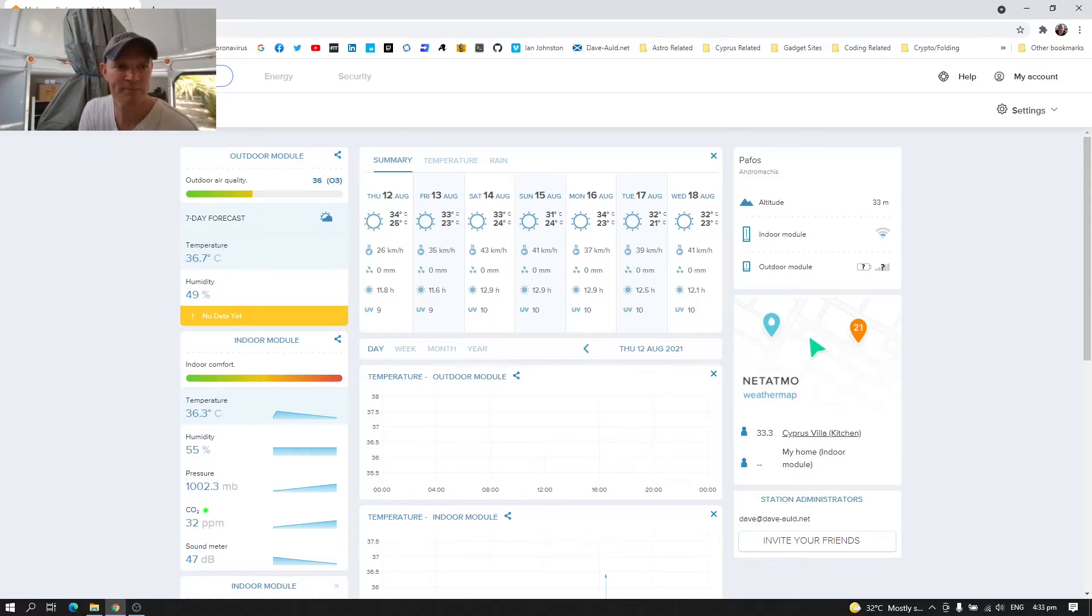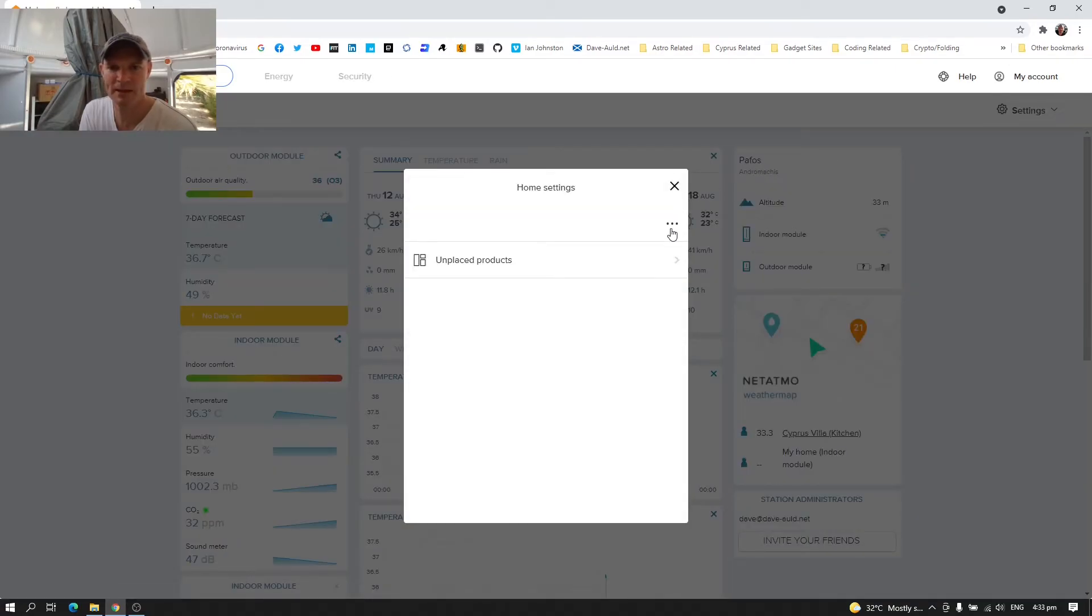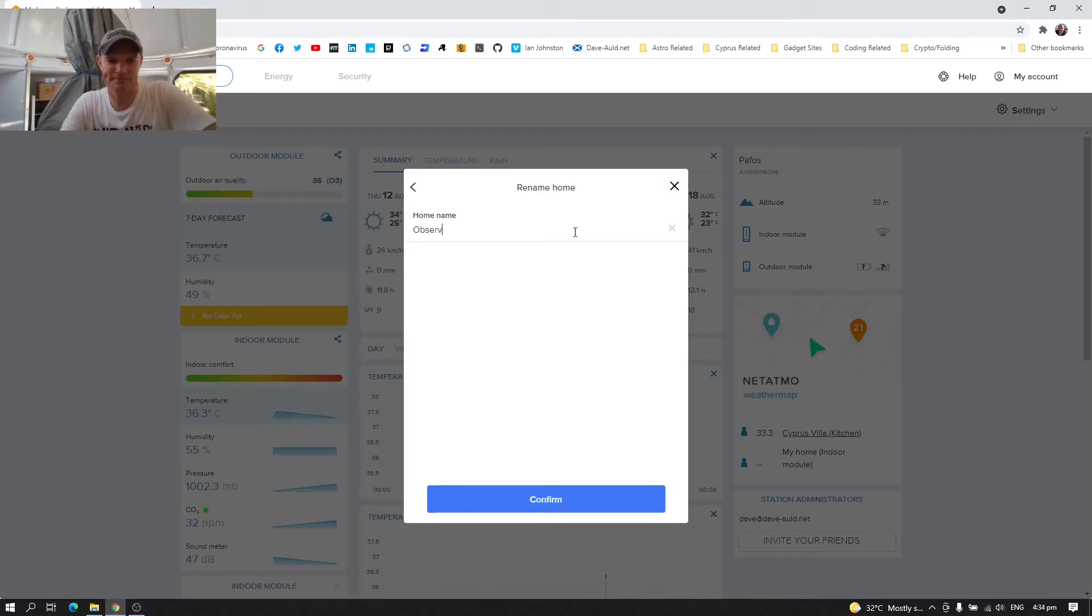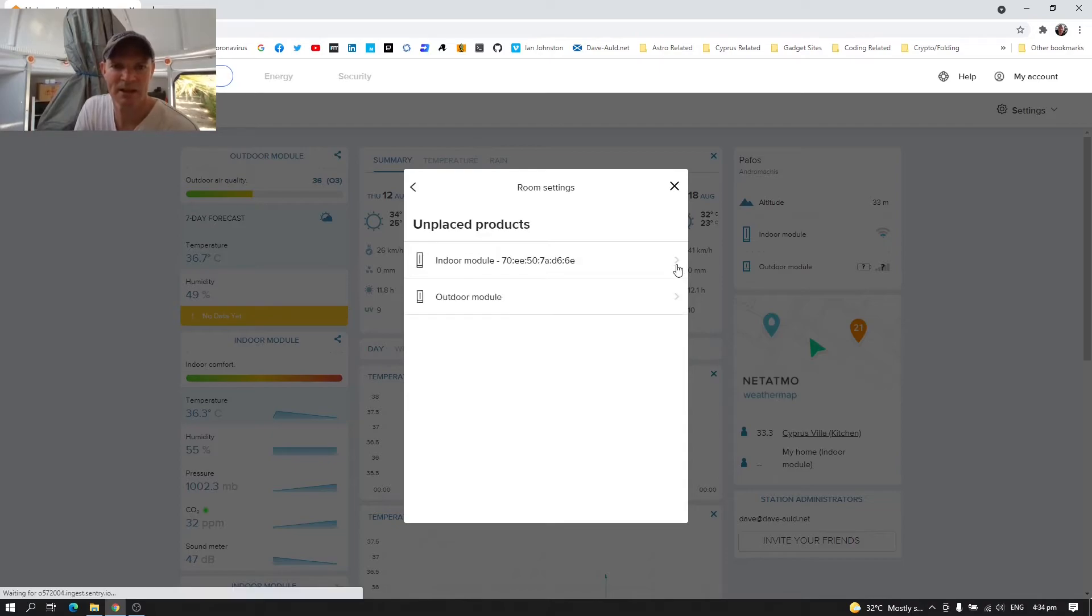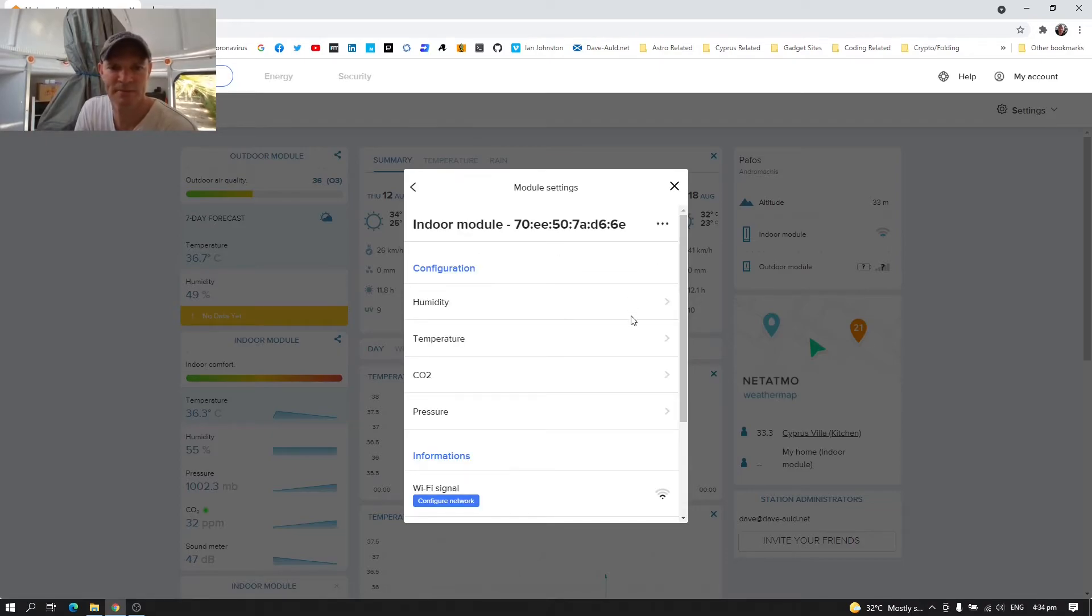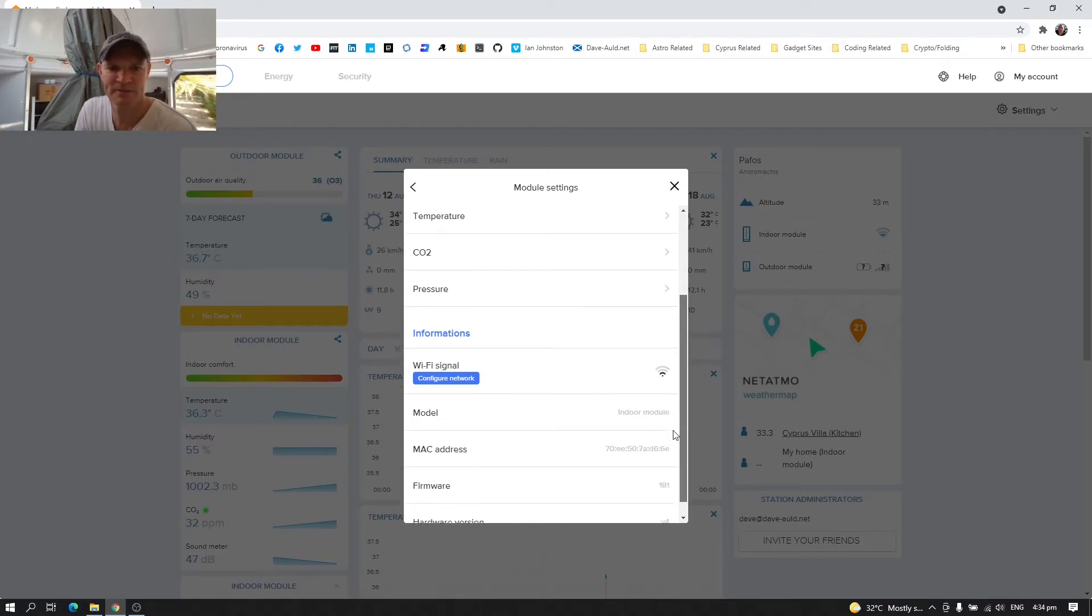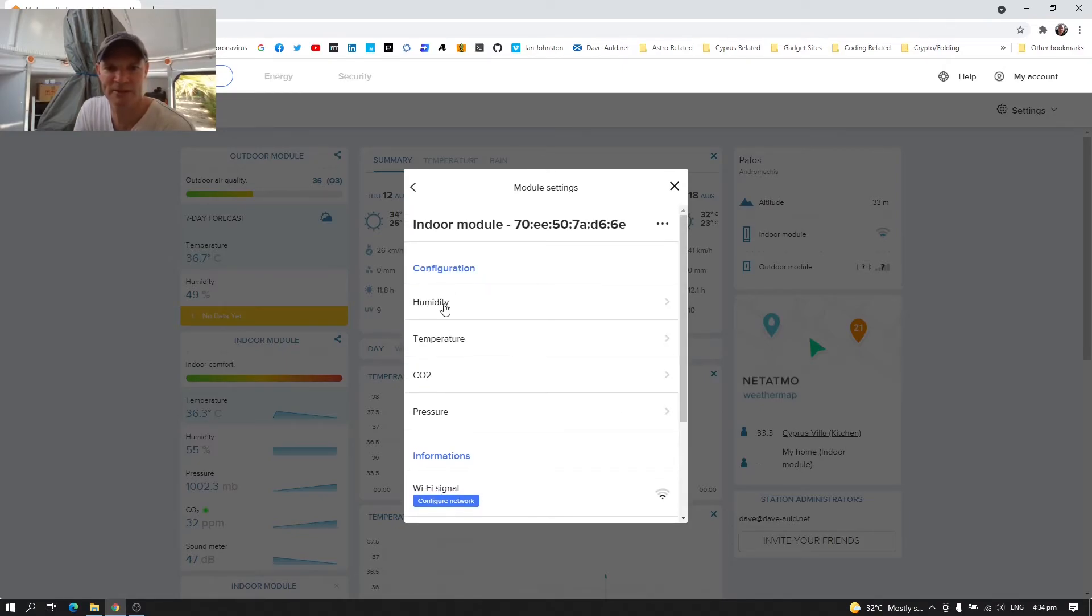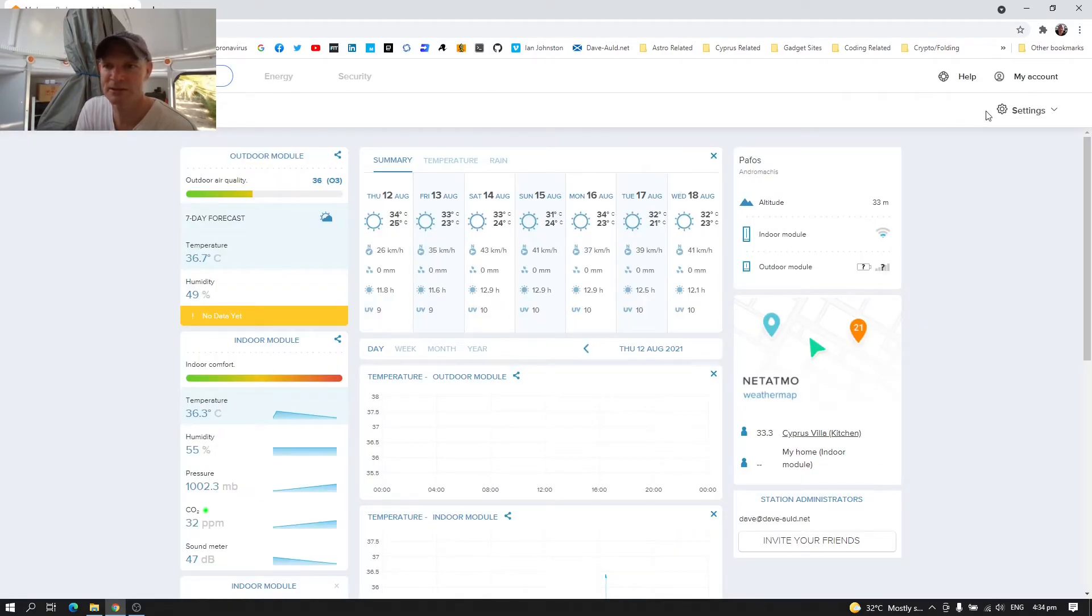So I've selected the my home indoor module, which is the default settings. We can go across the settings, drop down, manage my home, and then click the three ellipses at the top and we can rename it. So let's call it observatory and confirm. And we've got the indoor module. And we can do all the various configuration there, get the firmware updates and all that sorts of stuff there, which is good.